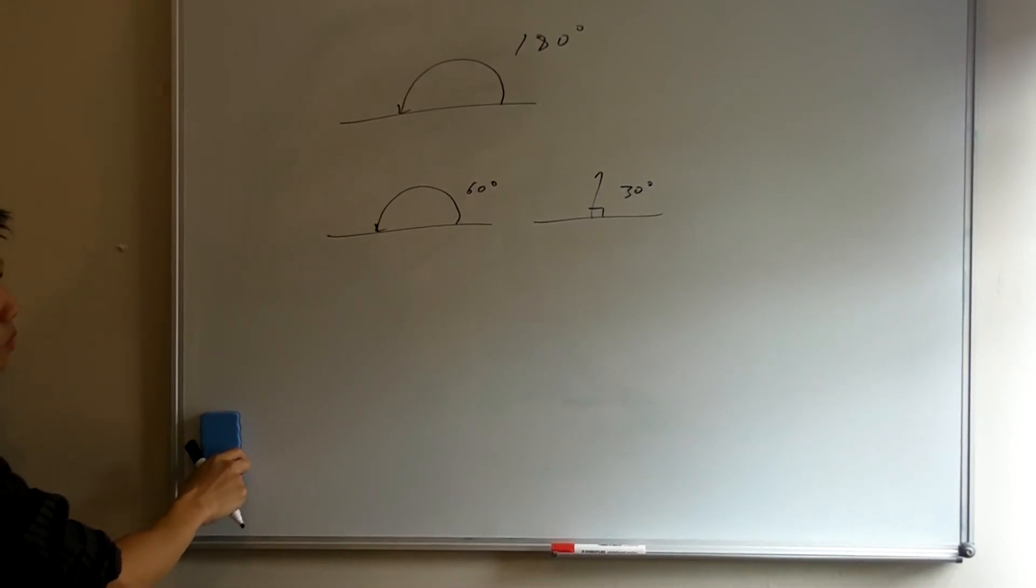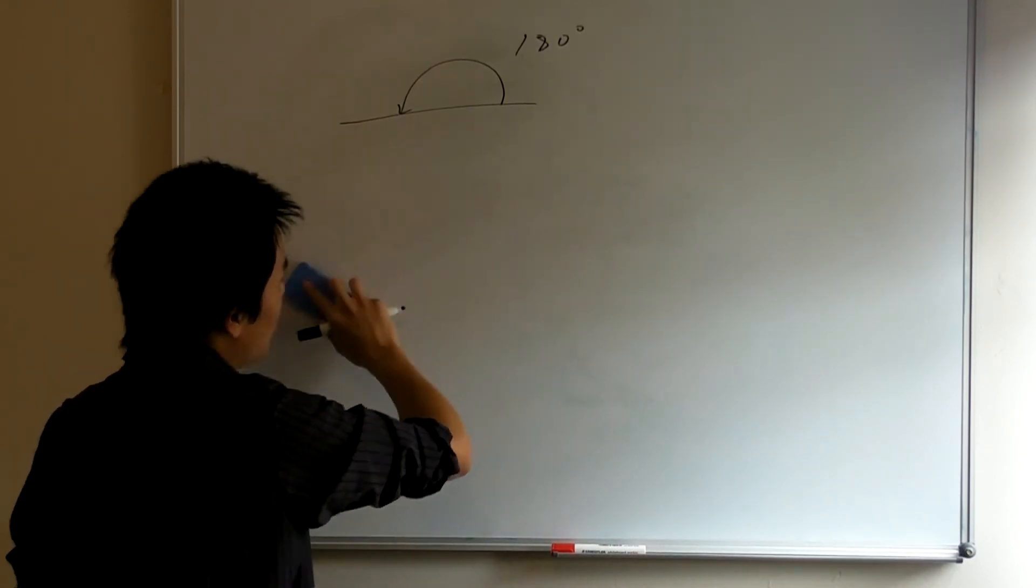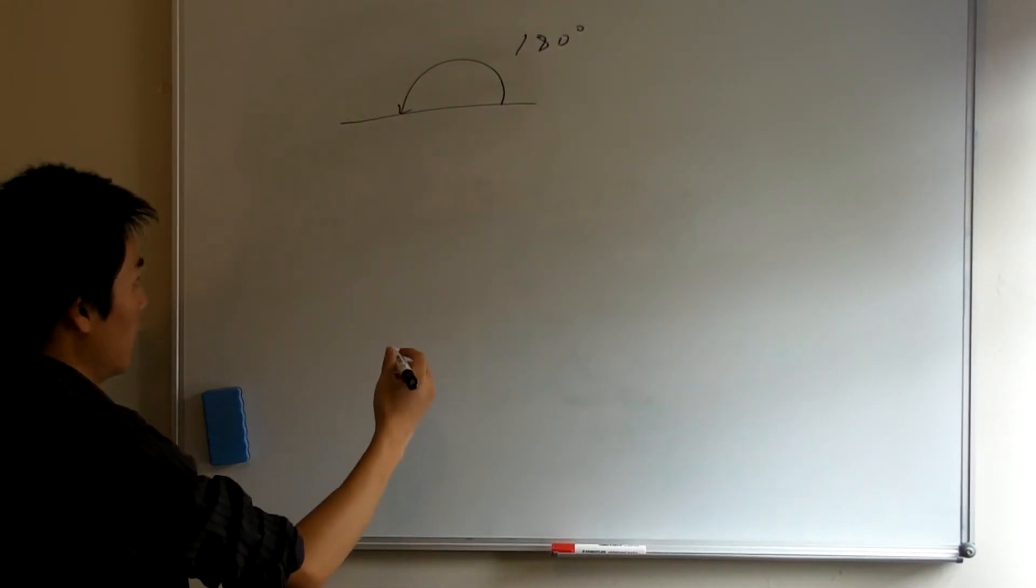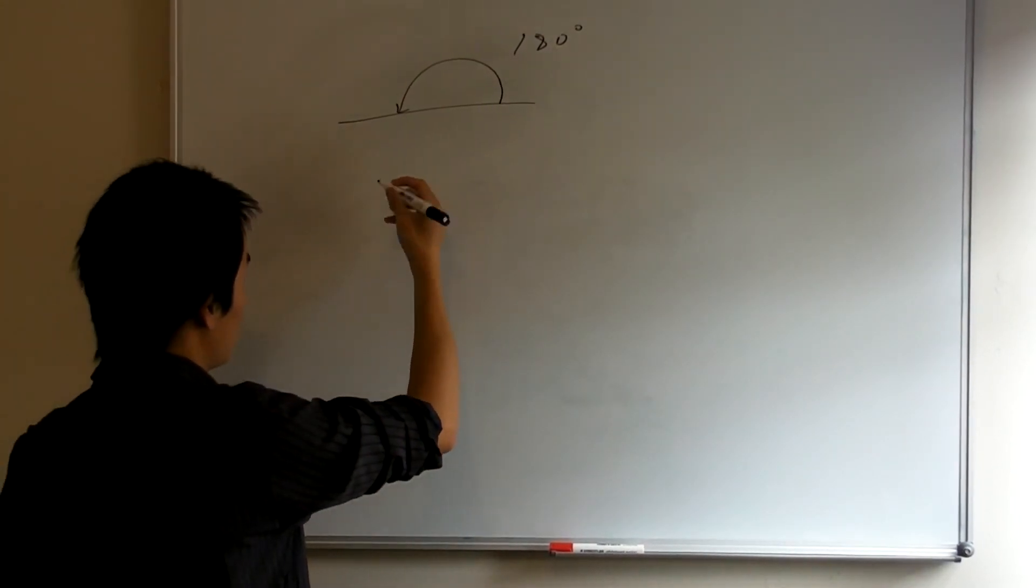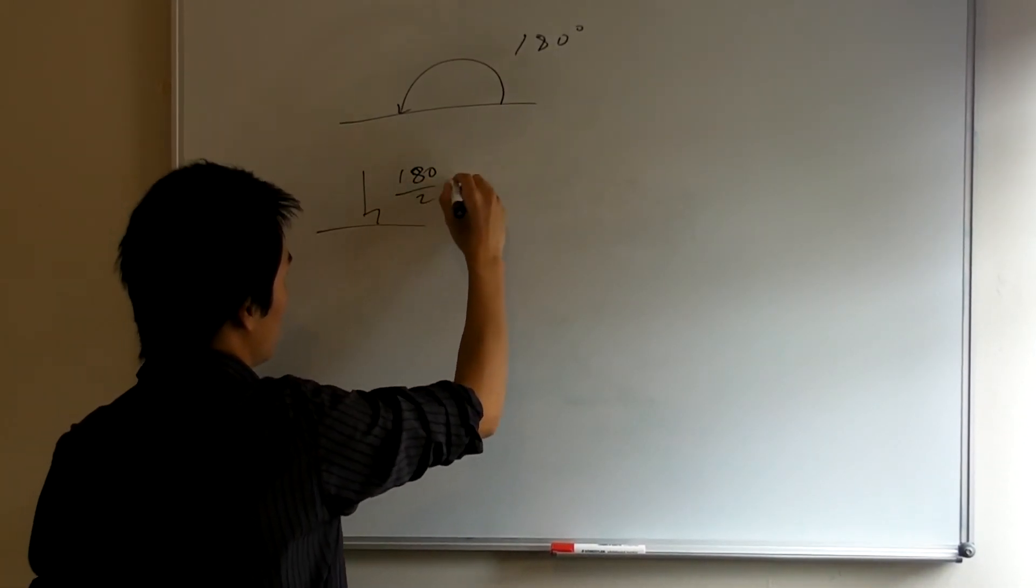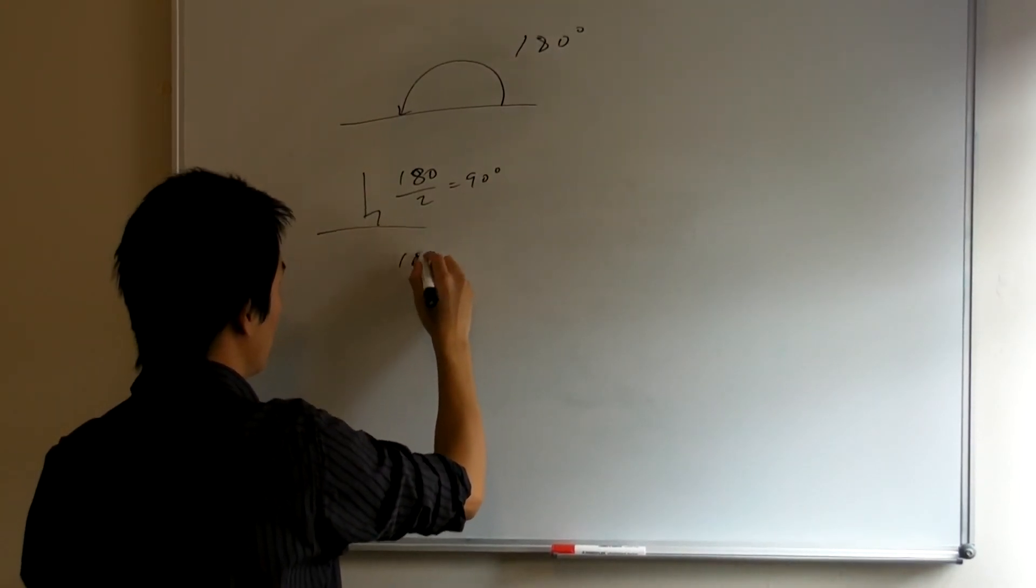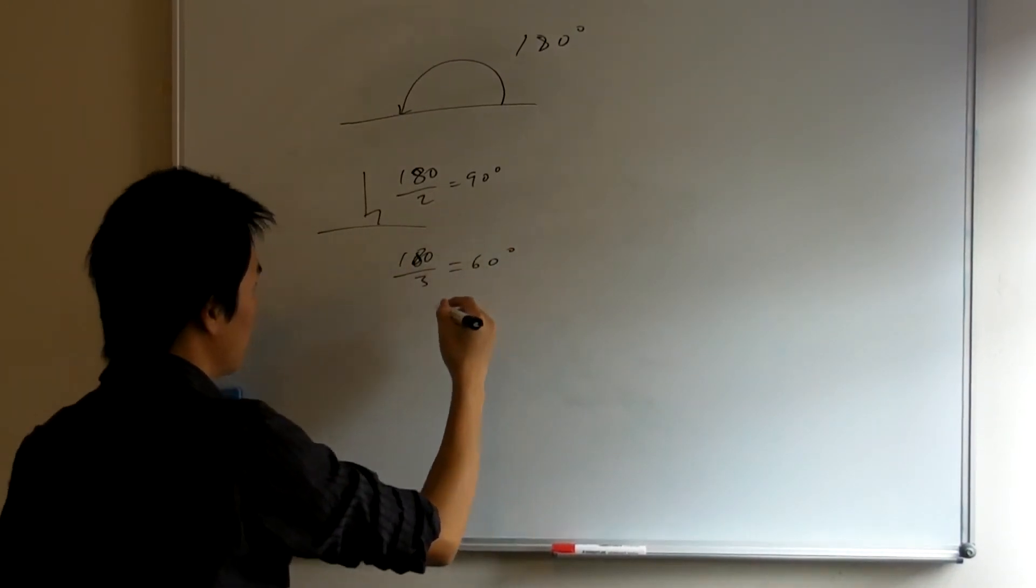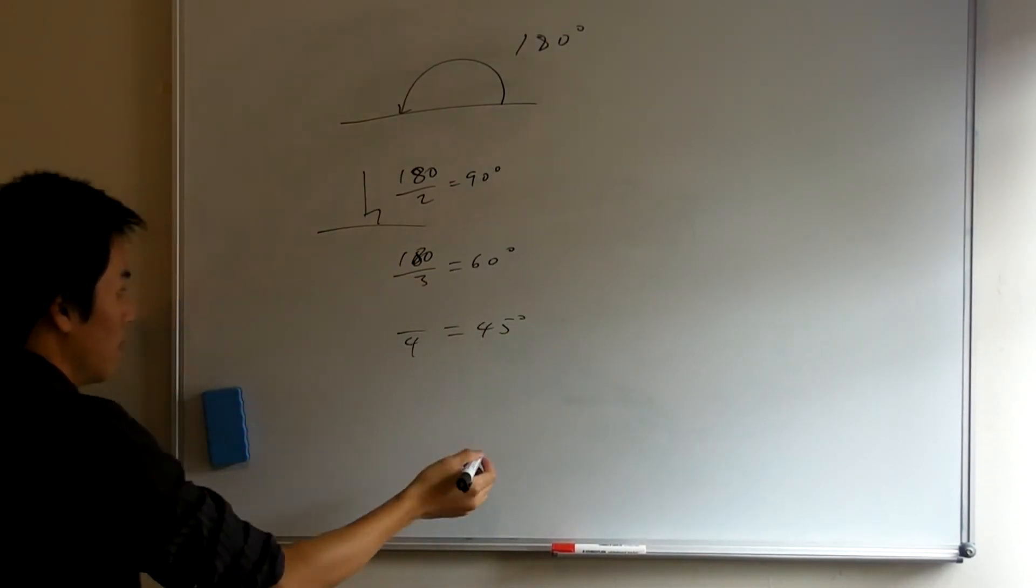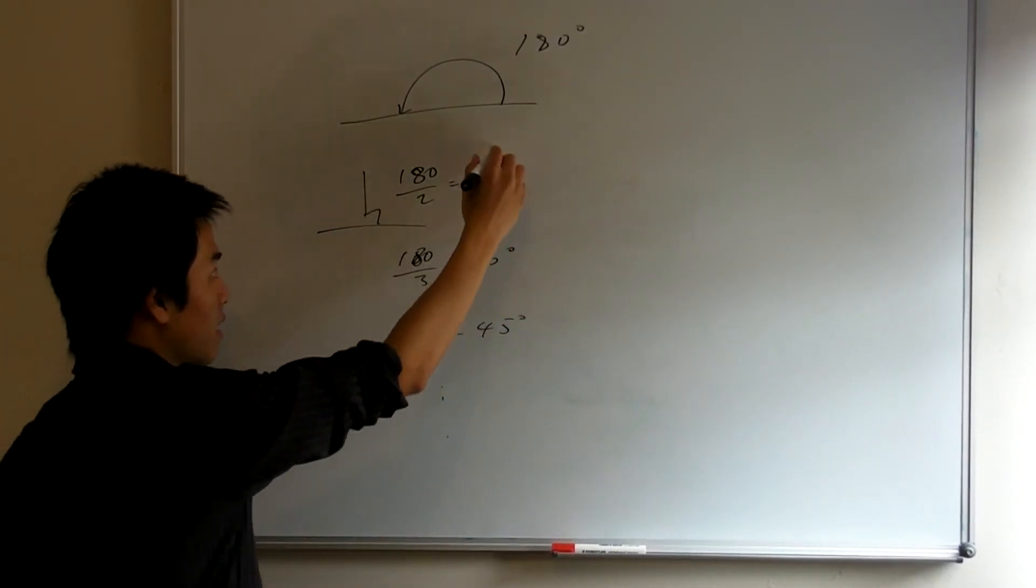So, the only reason we probably chose to use 180 degrees to represent the straight line is probably because the number 180 has lots of factors. So, many common angles have integer value representations. For example, 180 divided by 2 is 90. Divide by 3 is 60. So, many common angles have nice integer value representations.